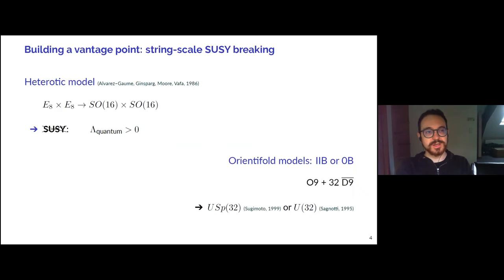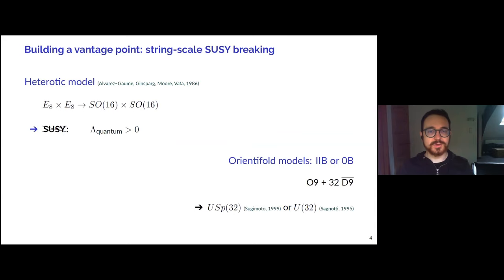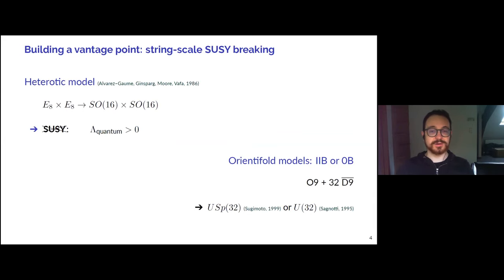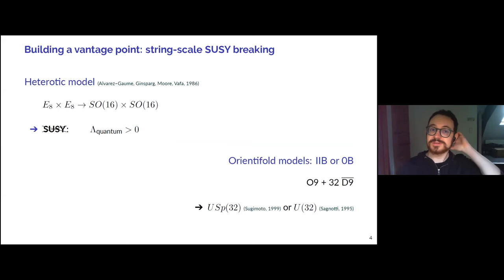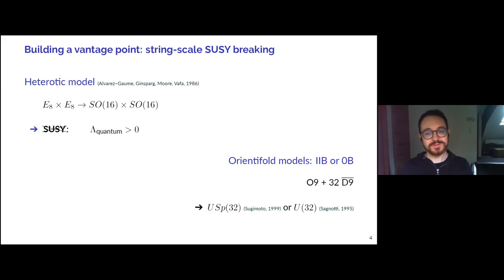I would like to start by briefly introducing these string models. There are three models organized in two classes: one is a heterotic model and the other two are orientifold models. All of these models live in 10 dimensions and their perturbative worldsheet formulation has no tachyons in the spectrum. So already these models seem pretty attractive in that supersymmetry is broken but tachyons seem to be absent from the spectrum.